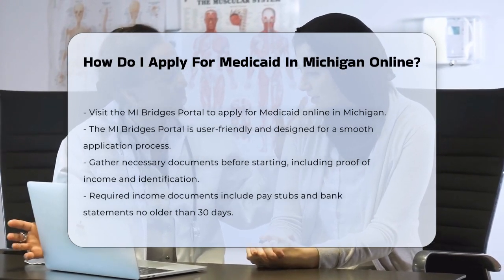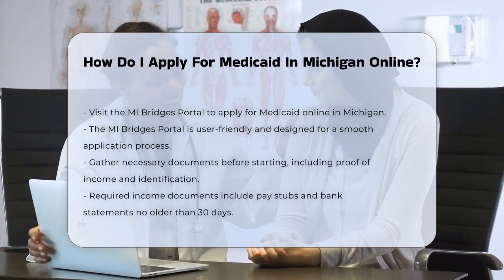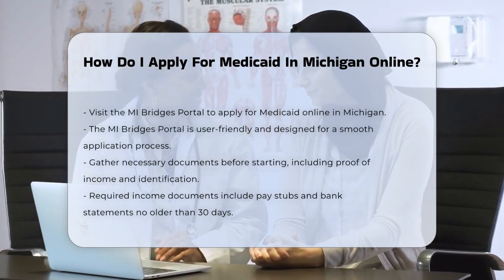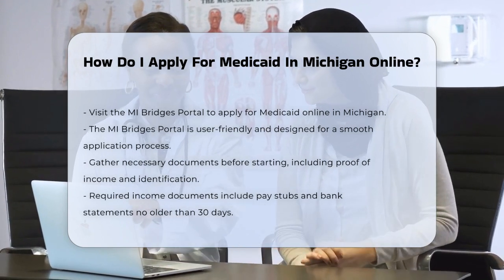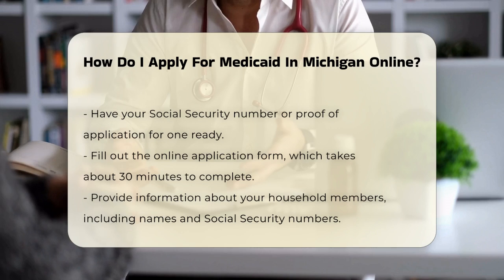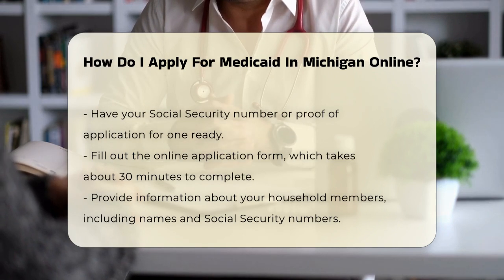Before you start, make sure you have all the necessary documents ready. You'll need proof of your income, such as pay stubs and bank statements, which should be no more than 30 days old. You'll also need your Social Security number or proof that you've applied for one, and identification documents like a driver's license or state ID.